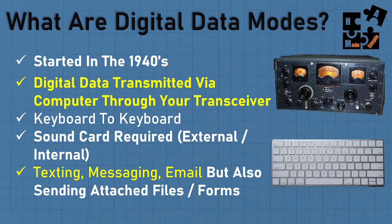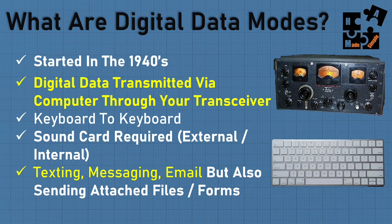Picture yourself on your cell phone texting or using an app like Telegram — that's basically what this is. You're doing texting, messaging, and email. But you can also attach files, forms, and pictures. It kind of blew my mind — I didn't think you could do it. It's not as fast as the internet, but can you actually communicate with somebody when there is no internet and no cell phone towers, and you both have your HF system set up doing digital? The answer is absolutely yes.